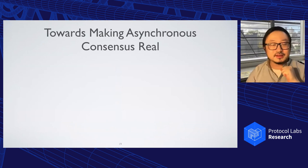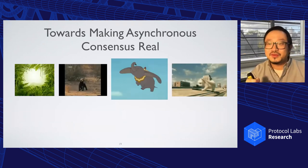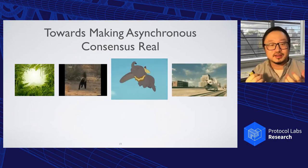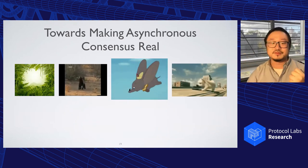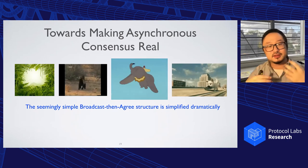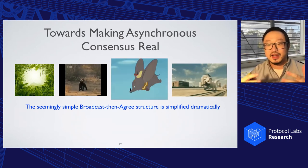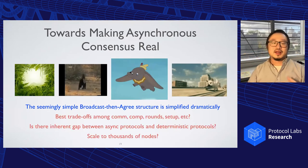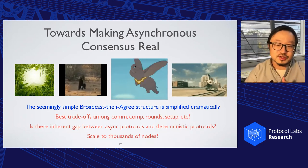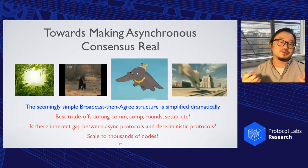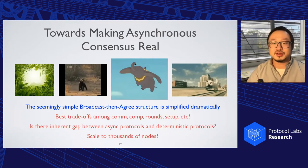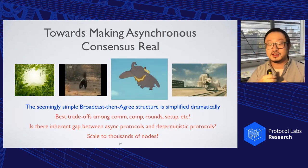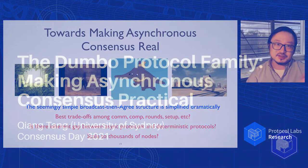Let me quickly wrap up. We walked a long way for asynchronous consensus, and the situation now is really much better than before. I believe we are really close to actual deployment. One reflection is that the seemingly simple broadcast and DAG structure actually have a lot of redundancy — we can simplify it in several surprisingly different ways. Of course, there are many remaining questions: what would be the best trade-off among various metrics like communication and rounds? I believe the lower bounds are not tight yet. And can we have an asynchronous protocol that scales to thousands or even more nodes? That's it — thank you.